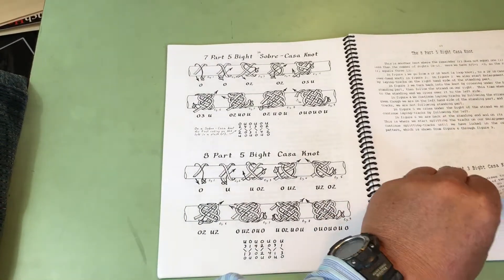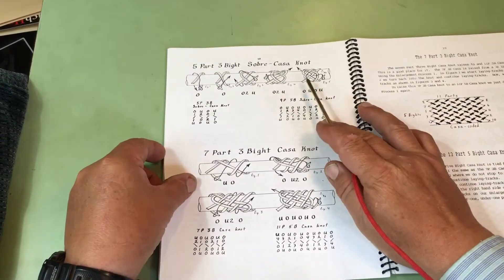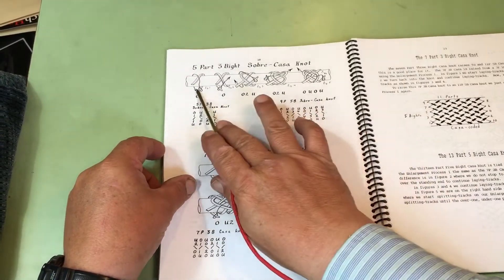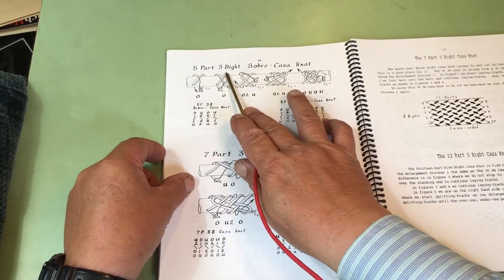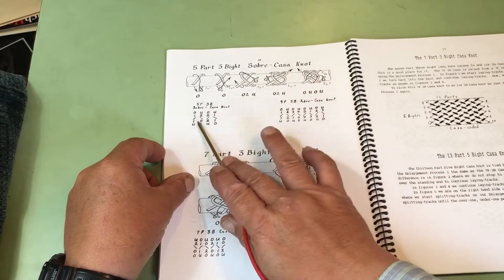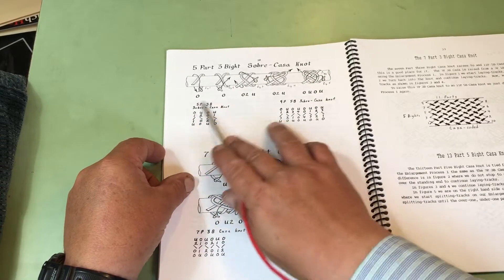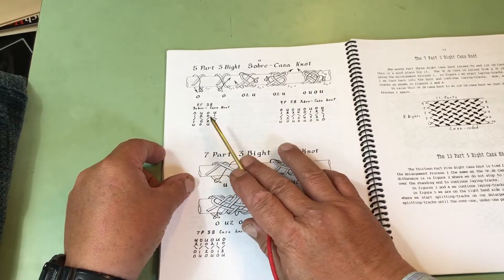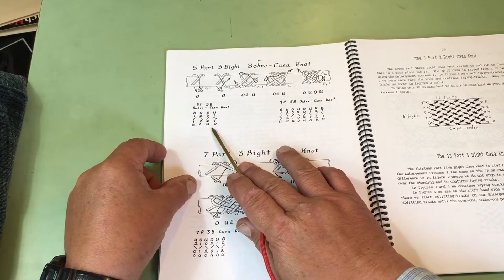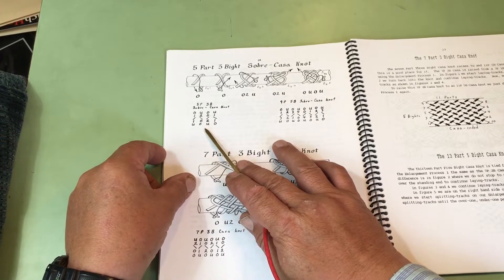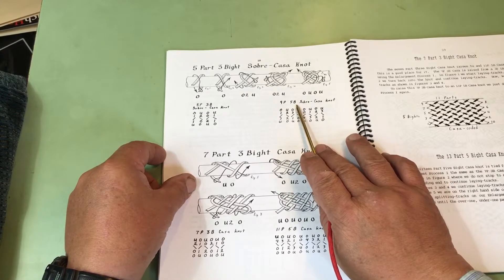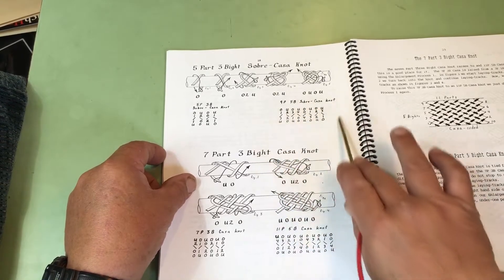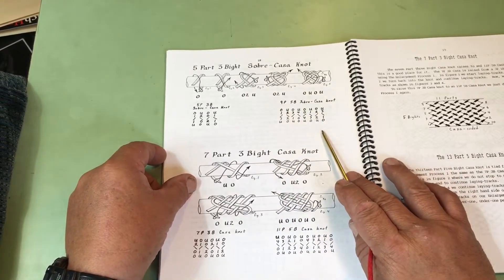On this one, I not only did the drawing of the five-part, three-bight Sobre Casa Knot, and this is the algorithm diagram for it. But if you continue the raising process, the next knot is a nine-part, five-bight Sobre Casa, and there is the algorithm diagram for it.